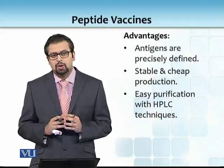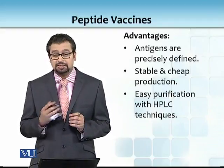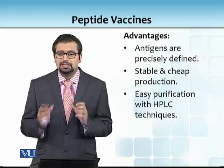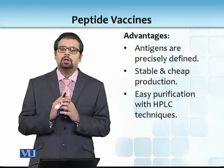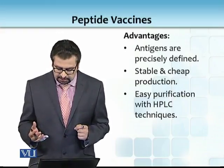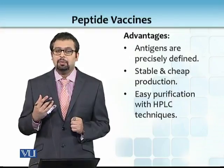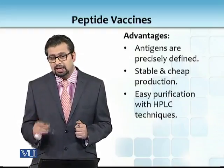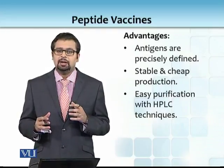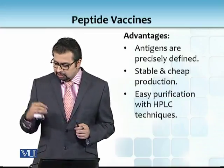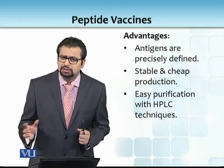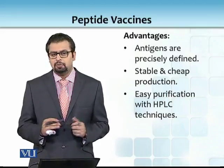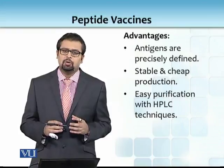But peptide vaccines give you a huge advantage, jis mein aapke paas antigens are precisely defined. Agar aapke paas ek special control ho to at least you can ultimately realize the concept of designer vaccines. Stable and cheap production — kyunke ab aapne jo extra junk produce karna tha jis ki aap ko zyada zaroorat nahi thi, woh aapko nahi karna pad raha. Agar aap just synthetically koi cheez produce karte hain jis mein sirf amino acids hain, to downstream processing, affinity chromatography aur woh saari cost khatam ho gayi — you can easily purify it with simple high-performance liquid chromatography.